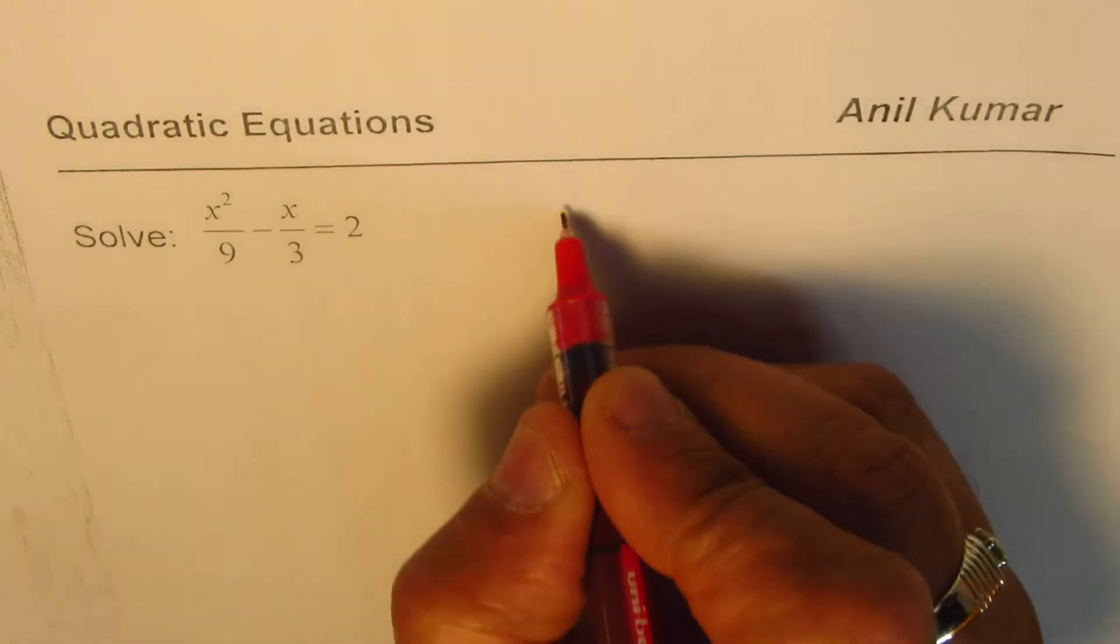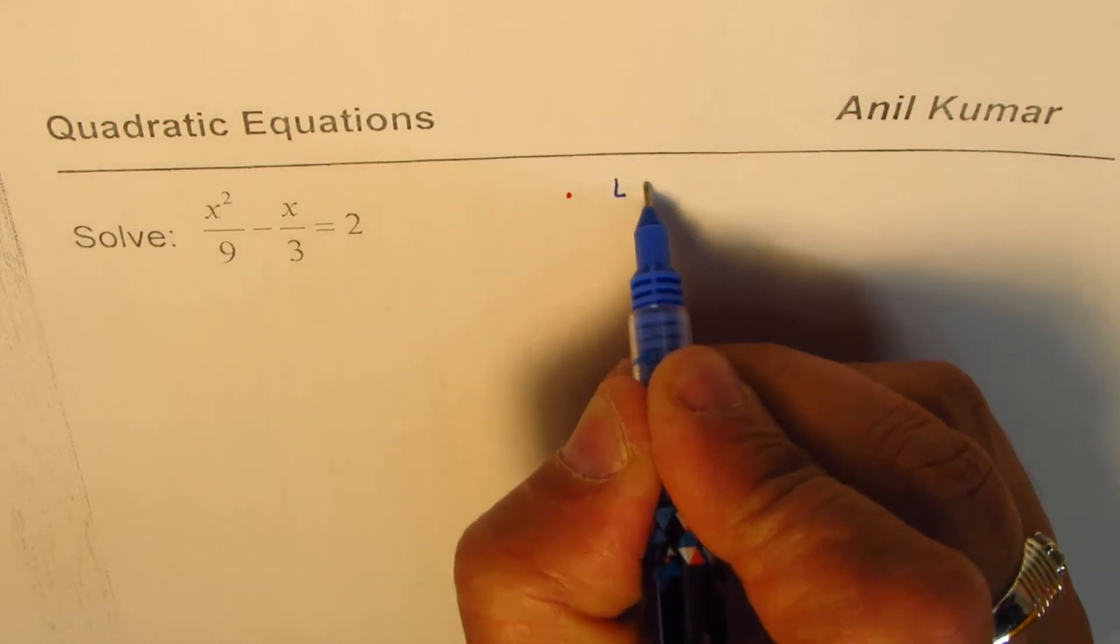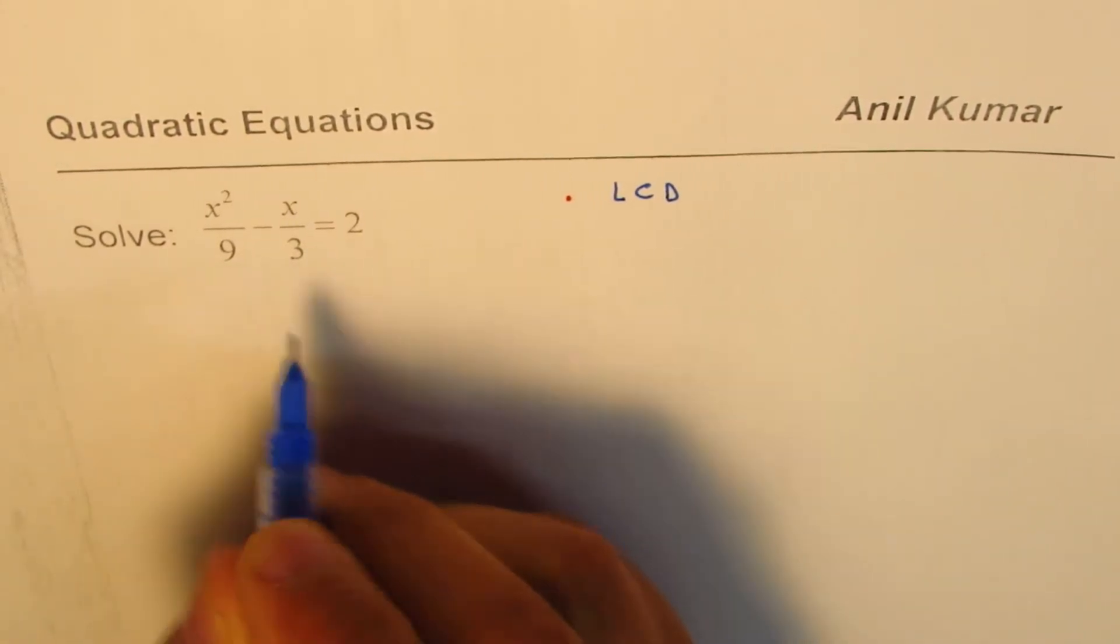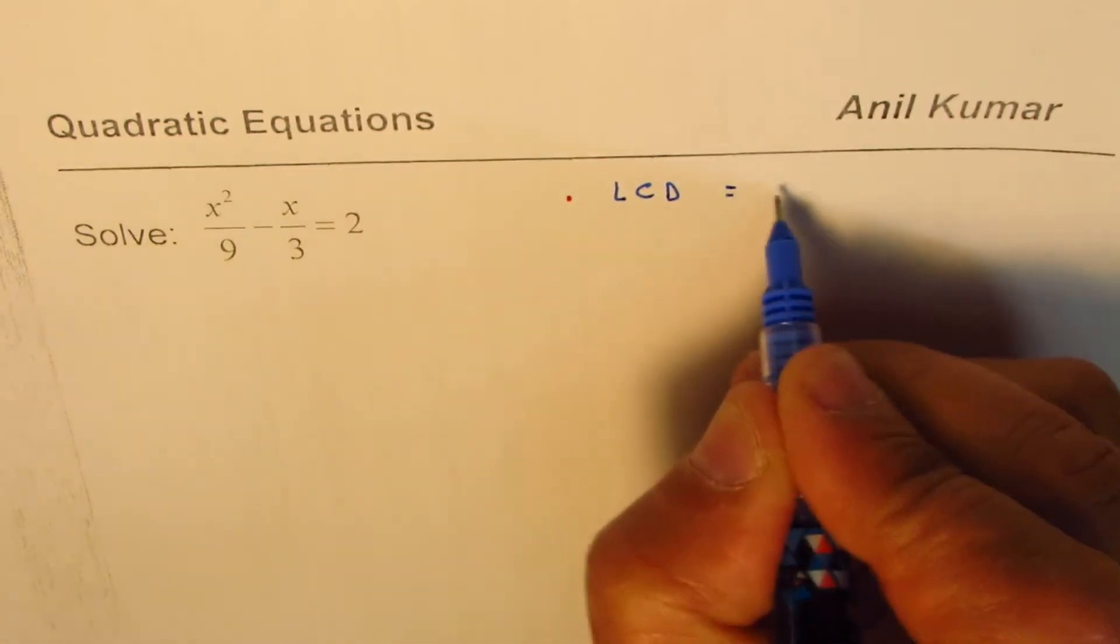The strategy here is first we should find the lowest common denominator. Now in this case between 9 and 3, lowest common denominator is 9.